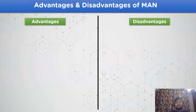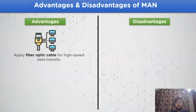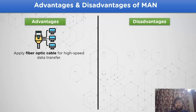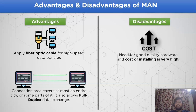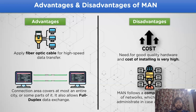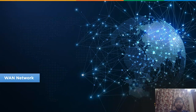For MAN advantages: it applies fiber optic cable for higher transmission and much better security compared to LAN. It also uses full duplex method for data transmission, meaning data exchange occurs simultaneously. As for disadvantages: it needs good quality hardware resources and the cost of installation is very high. It also needs an experienced technician to maintain and provide efficient data services.